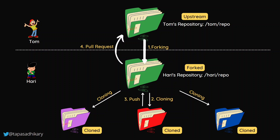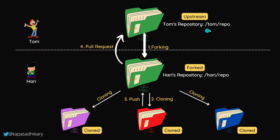Instead of going that uncertain route, Harry can simply fork the repository. When the fork button is clicked, every file and folder from Tom's repository comes into Harry's repository. Tom's repository is called the upstream repo, and Harry's copy is called the forked repo — these are important terminologies, useful in interviews too. The URL changes from slash-tom-slash-repo-name to slash-harry-slash-repo, forked from slash-tom-slash-repo.